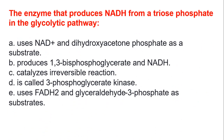The enzyme that produces NADH from triose-phosphate in the glycolytic pathway: A, uses NAD+ and dihydroxyacetone phosphate as substrates. B, produces 1,3-bisphosphoglycerate as a product. C, catalyzes an irreversible reaction. D, is called 3-phosphoglycerate kinase. E, uses FADH2 and glycerate-3-phosphate as substrates. The answer is B, which produces 1,3-bisphosphoglycerate and NADH.